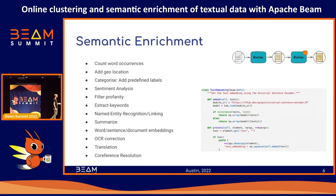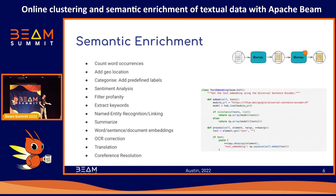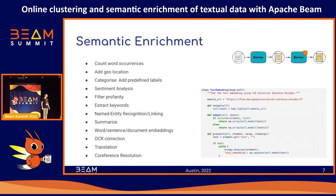One very naive way is a simple custom DoFn where in the process method we take the text and then very naively load the model in each instantiation of the embedding function, load the model, get the embedding, and add this to the output. Of course, this is probably not the best way to do it because in each instantiation we would need to load the model, which can be very large — we are talking about multiple gigabytes of data. One alternative is to utilize the setup function to load the model only once per instance so it can be reused between bundles.